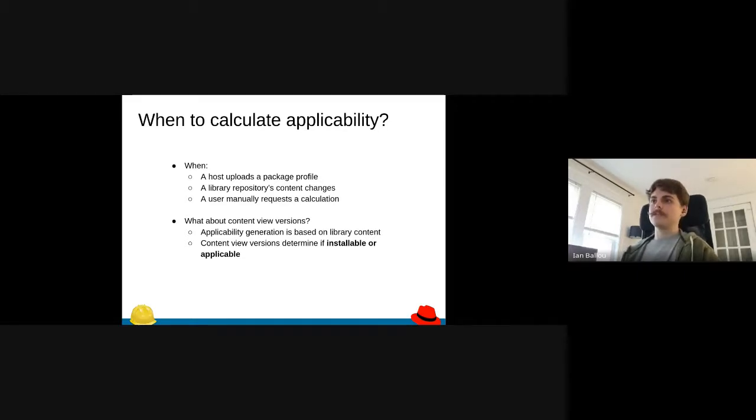Lastly, a user can also manually request a calculation. These are all times that host could be requested to have their applicability recalculated. These can all happen at the same time too, which is an important thing to know. Some folks might be thinking about content view versions. That's not something we have to worry about because applicability is based on the library content. The content view versions just determine if it's installable or applicable, so at least we don't really have to worry about that.